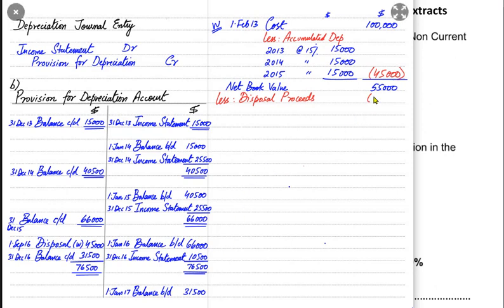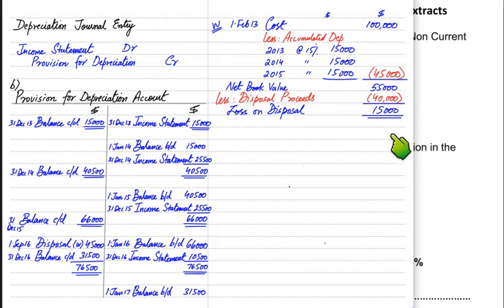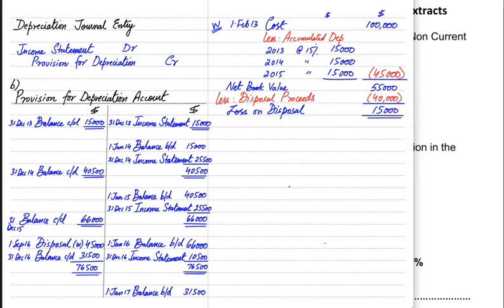The book value in our books was 55,000 but we sold the asset for 40,000 — less than book value. Therefore, the 15,000 difference is a loss on disposal. If instead we had sold the asset for more than book value, say 60,000, then the 5,000 difference would be a gain on disposal. Selling for less than book value means a loss; selling for more means a gain.